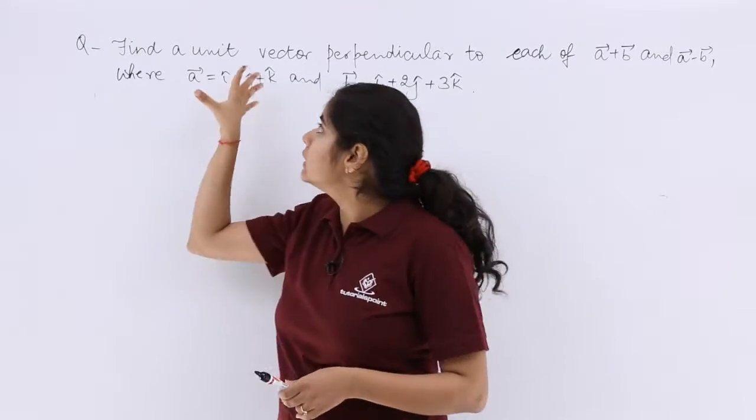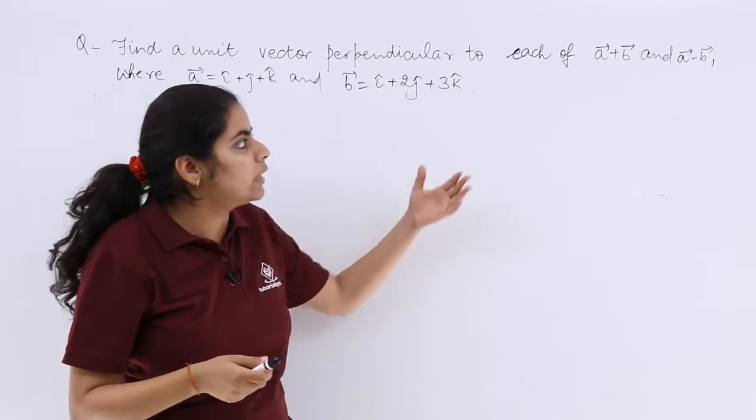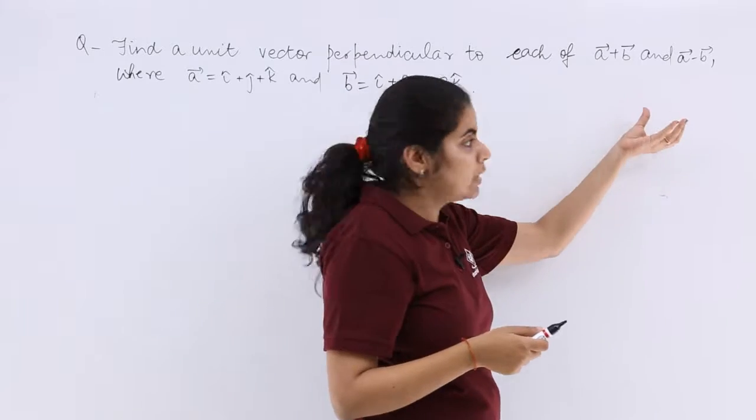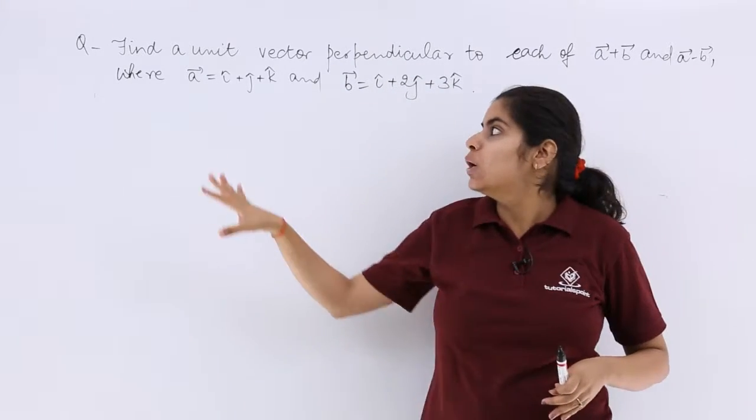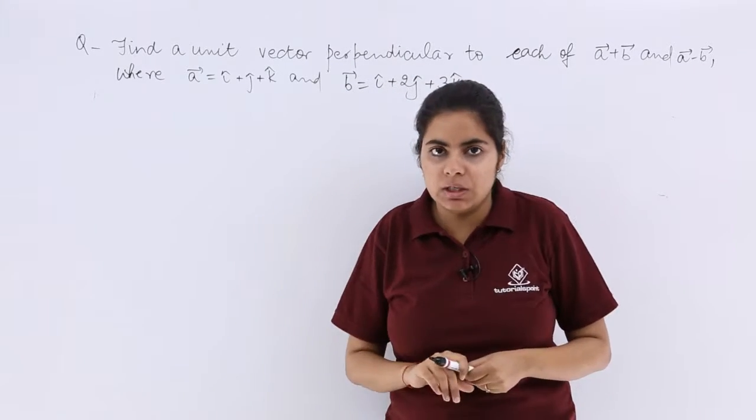Now this question says find a unit vector perpendicular to each of vectors a plus b and a minus b, where a is given and b is given.